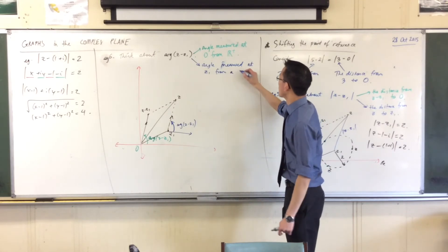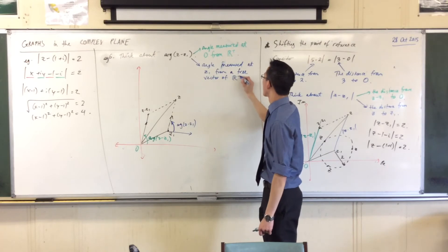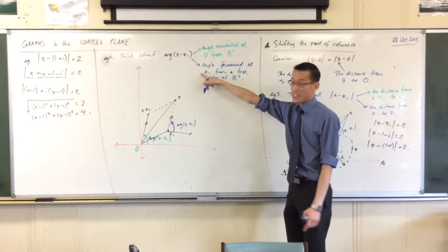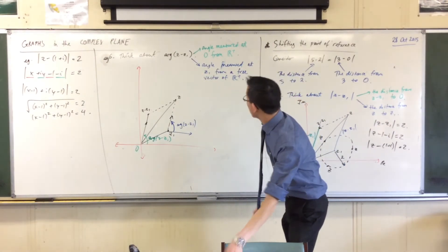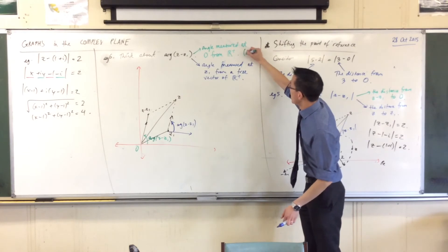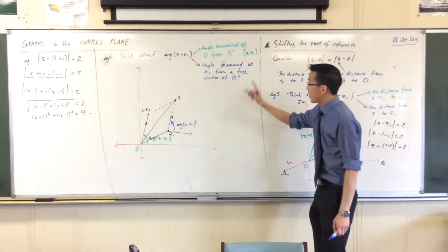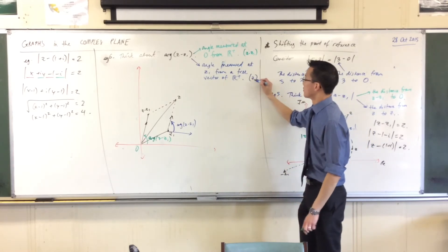This green one is thinking about z take away z1 as a point over there, and this blue one is actually thinking about z. That's where it's actually looking, with a new point of reference.